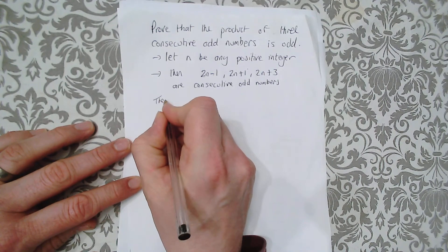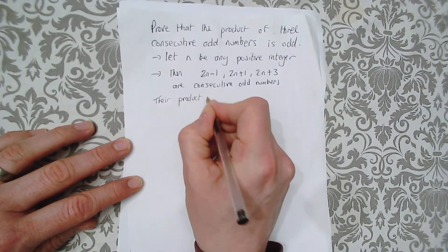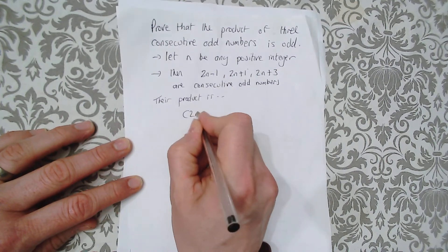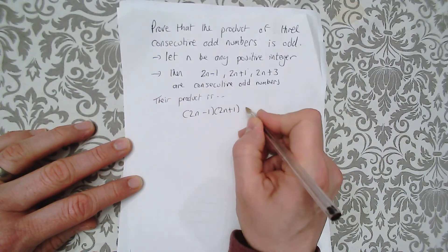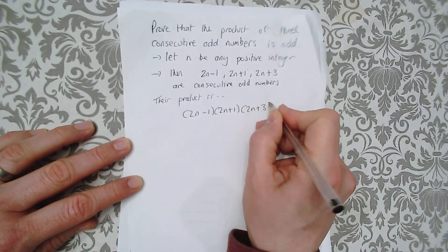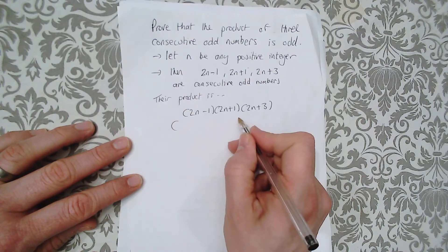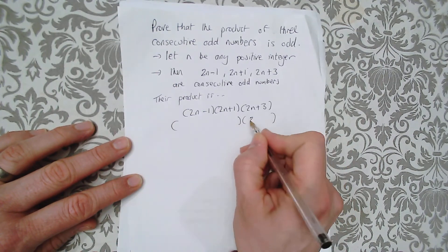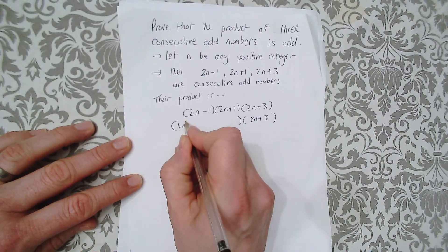Now the product is 2n minus 1, 2n plus 1, 2n plus 3. So now we just have to do the multiplication. Well let's do this bracket first.